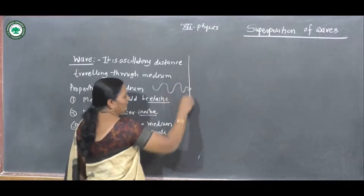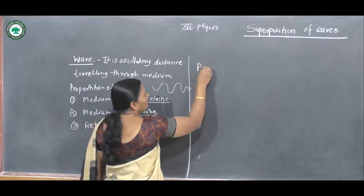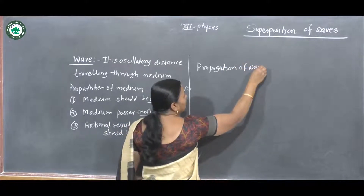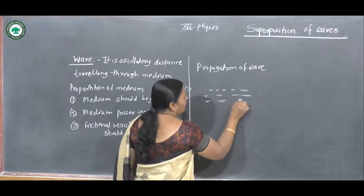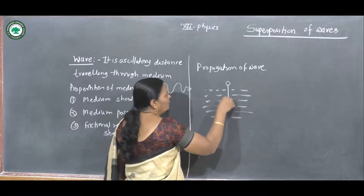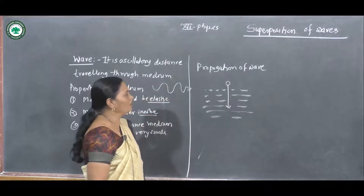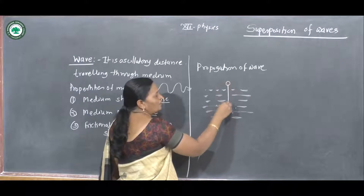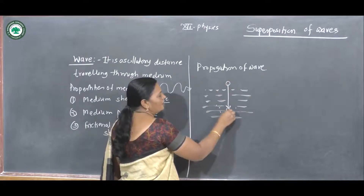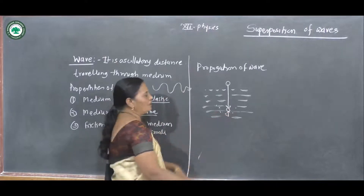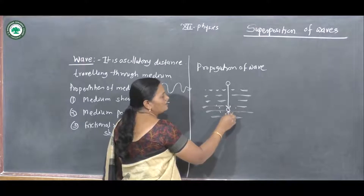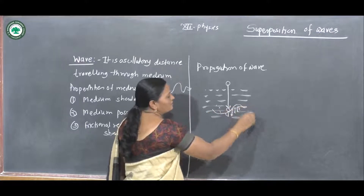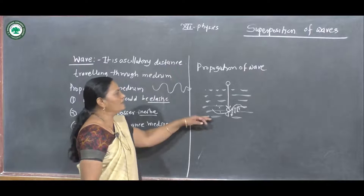Now how is the wave propagated? Suppose there is a water tank. If a stone is dropped into the water tank, there are a number of particles. Due to the vibration caused by the stone, the particles get vibrated. Due to vibration of one particle, vibrations are transferred — or energy is transferred — from particle to particle and the wave is generated. This is the oscillatory disturbance travelling through medium, forming a wave.